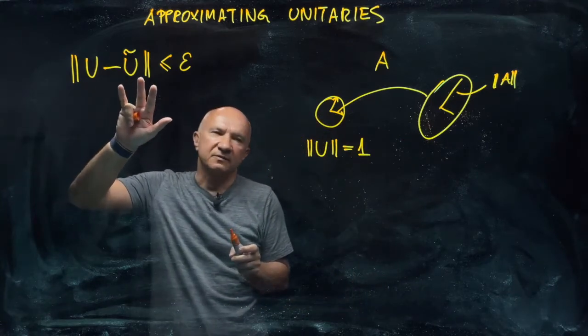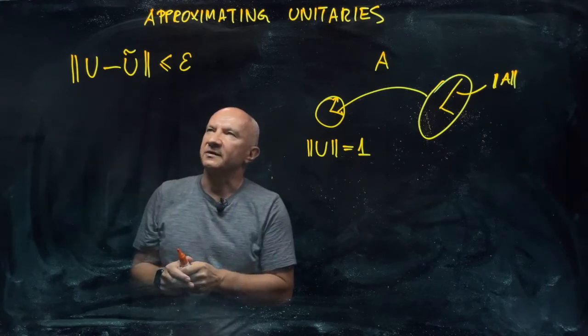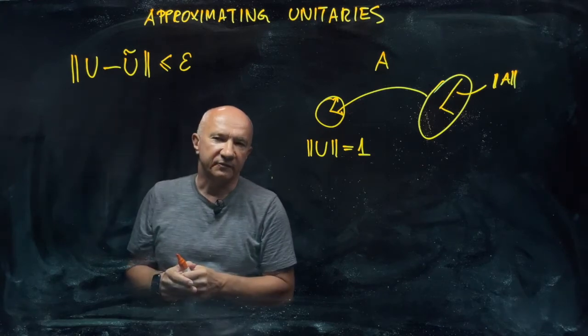So in order to get the distance of the metric, you just take the difference between the two operators and take the norm of this difference.